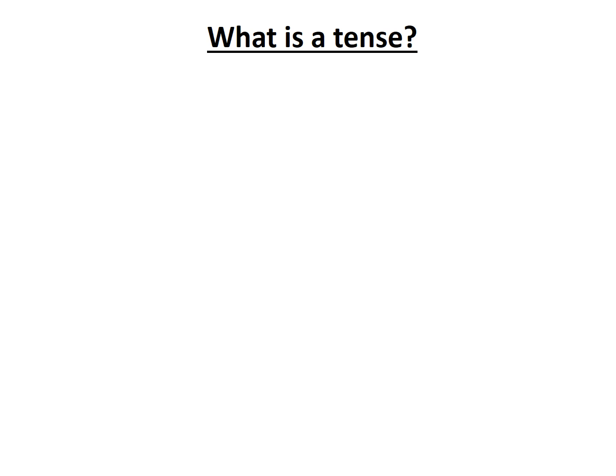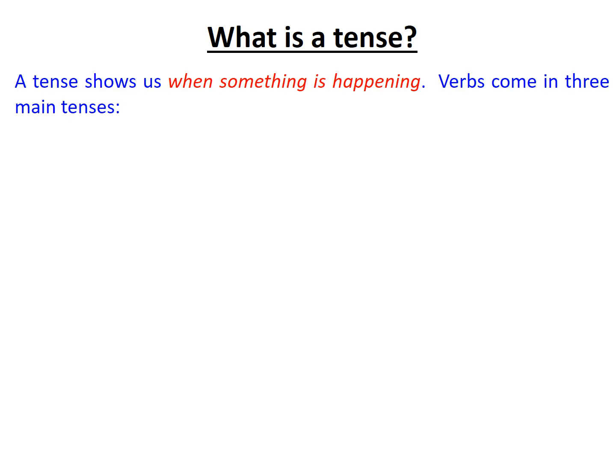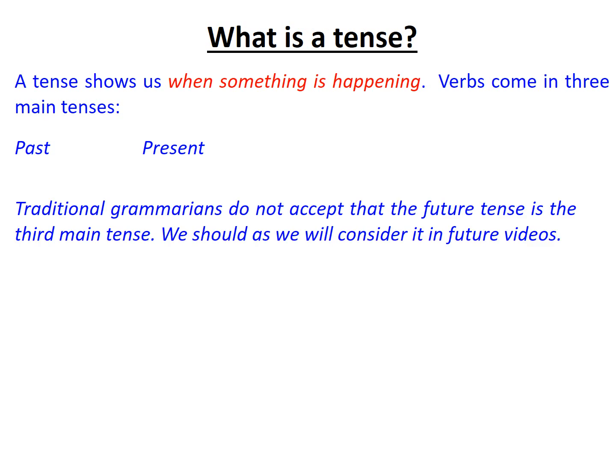Verbs come in a number of different tenses. For the purposes of our videos I'll be saying that they come in three tenses, but I'll also establish with you that grammarians often see just two tenses — past and present. They often don't accept that the future tense is a third main tense. For us, it's critical that we also understand that the future tense is an important tense to consider.